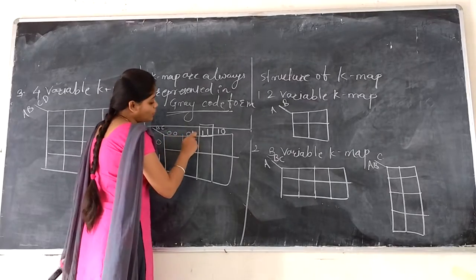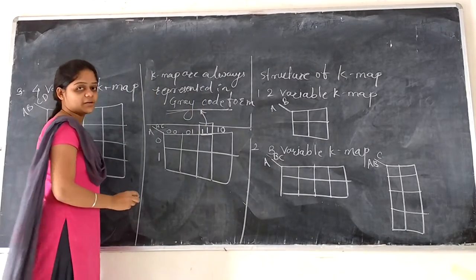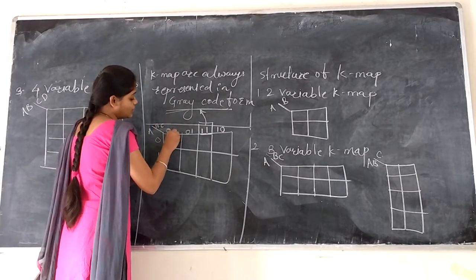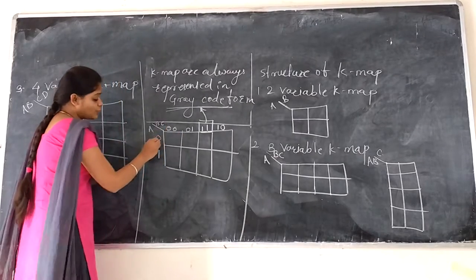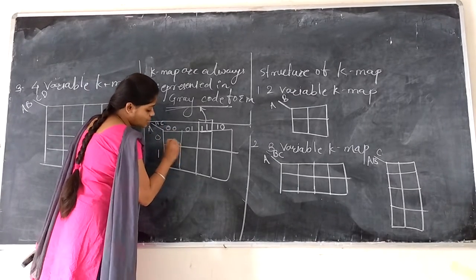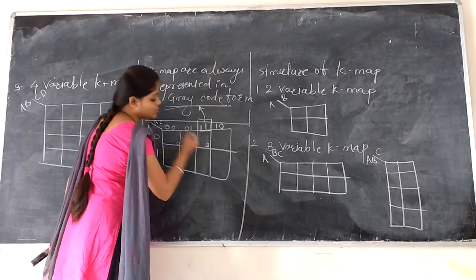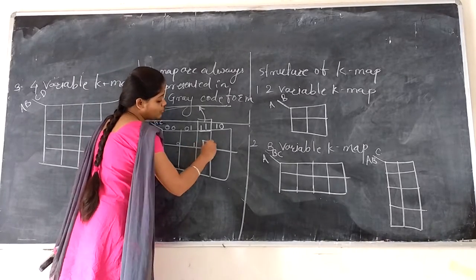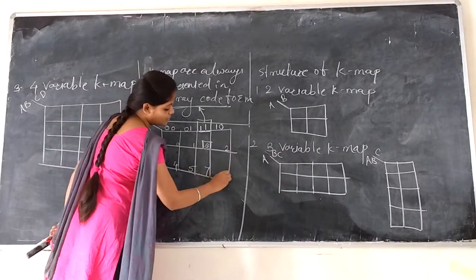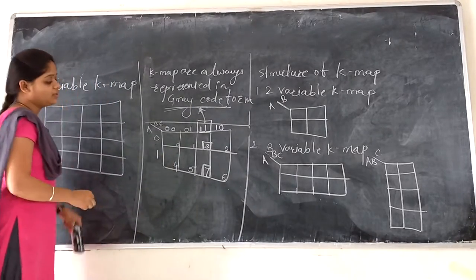Notice this. Sequence is 00, 01, 11, and then 10 as K-maps are represented in Gray code. So from these two values, first value is representing variable B and second value is representing variable C. From these values, we can assign cell numbers to K-map: 0, 1, 3, 2, then 4, 5, 7, 6. Sequence is changed because K-maps are represented in Gray code form.